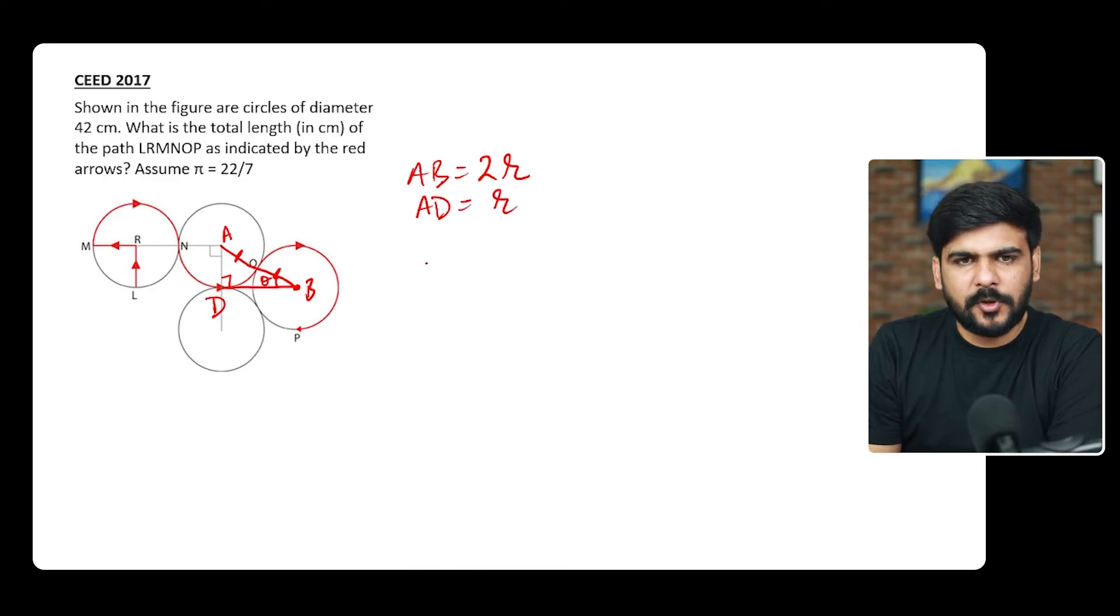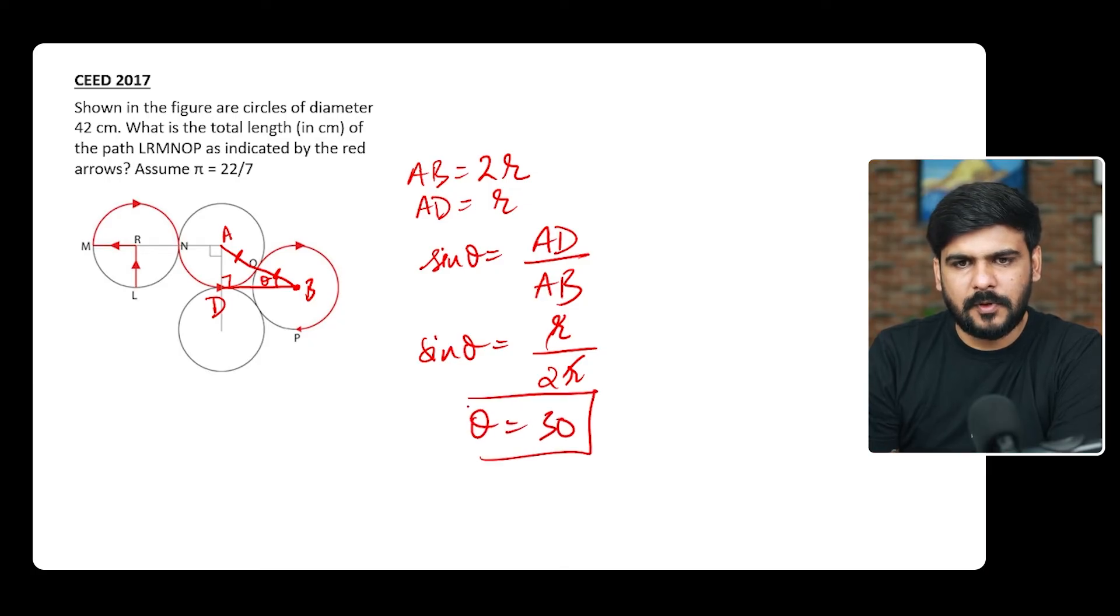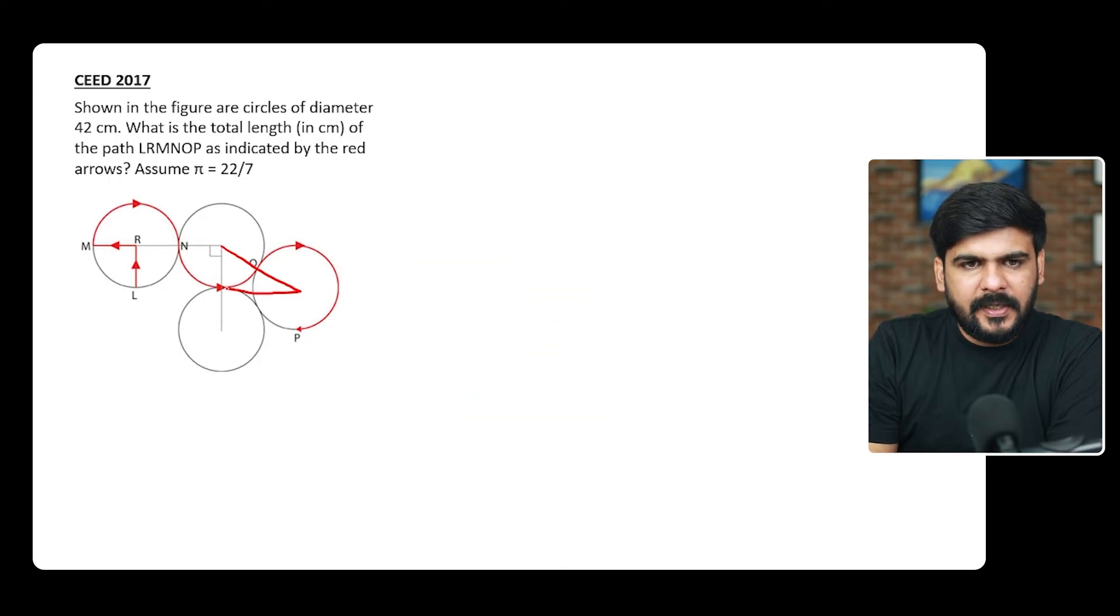And if I consider this AD line which is the perpendicular here, it is equal to radius. So if I put sin θ here, it would be AD divided by AB, perpendicular upon hypotenuse. So sin θ would be equals to r over 2r, that is 1/2. And sin θ = 1/2 means θ is 30 degrees, because sin 30° is 1/2. So now this angle is 30, so this would be 60 degrees.